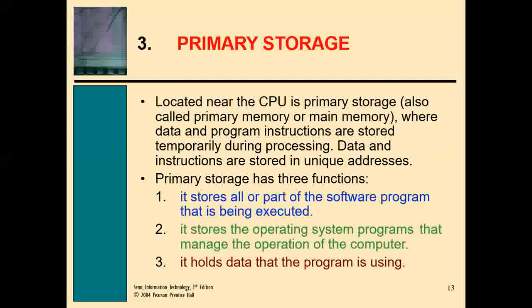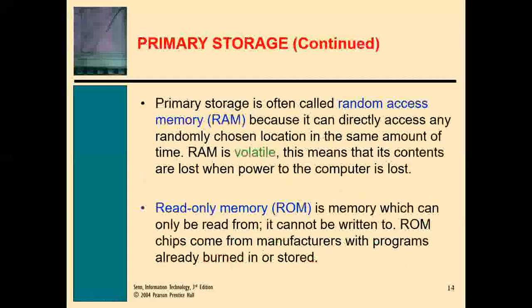Primary storage, located near the CPU, has three functions: it stores all or part of the software programs being executed; it stores the operating system programs that manage the computer's operation; and it stores all data the program is using. If the computer switches off, that data is lost. Primary storage allows random access — RAM can directly access any randomly chosen location in the same amount of time, but its contents are lost when power is removed.